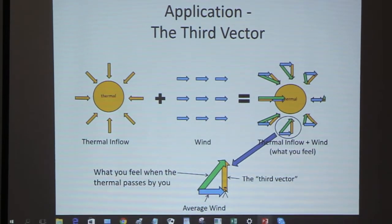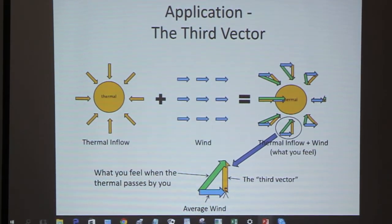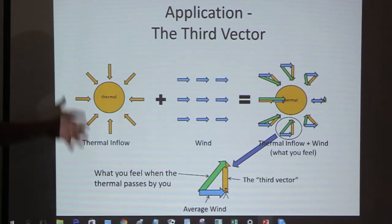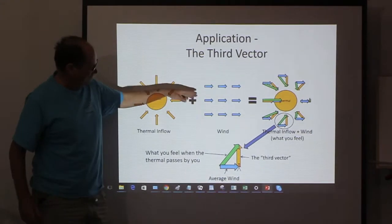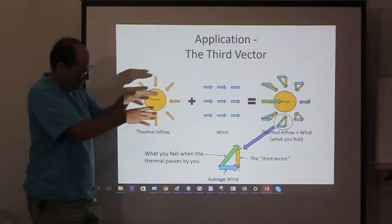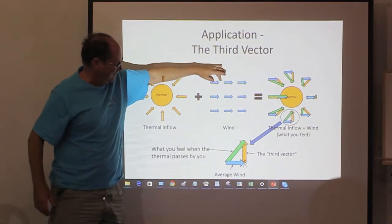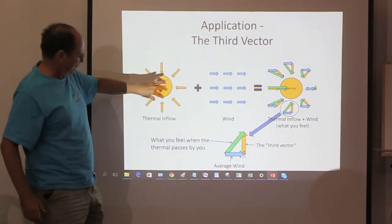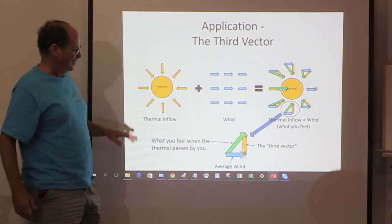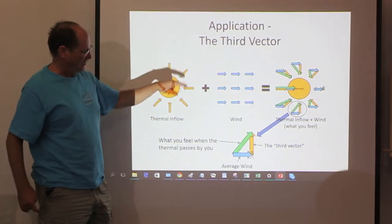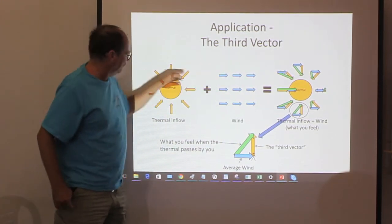What you're looking for - there's no wind at all. You've just got a certain amount of wind blowing, and so you think of this as a velocity, and then add a thermal to it, which is just pulling air in. What you end up feeling around the thermal is the summation of those two.